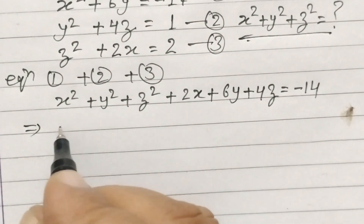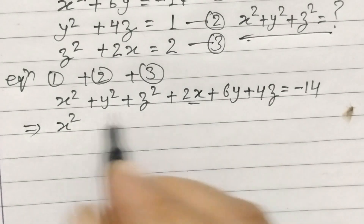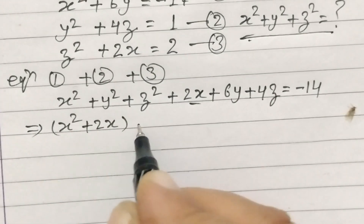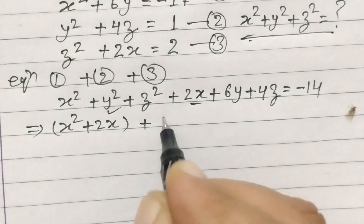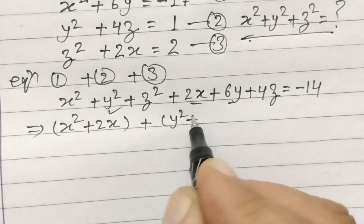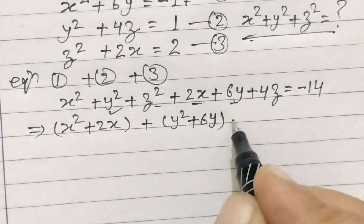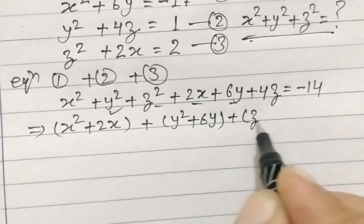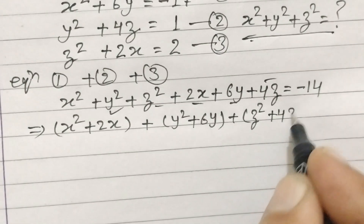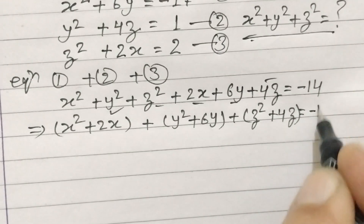Now if we rearrange the equation: x squared plus 2x plus y squared plus 6y plus z squared plus 4z is equal to minus 14.